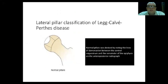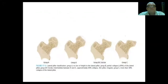In the lateral pillar classification of Herring, there is a central osteonecrotic part. The lateral 25% of the femoral head is the lateral pillar, which supports the weight-bearing area. In Group A, there is no loss of height. In Group B, less than 50% loss of the lateral pillar. In Group B/C, the findings are intermediate between B and C. In Group C, there is more than 50% collapse of the lateral pillar.